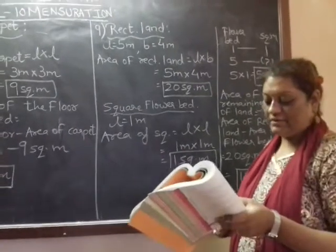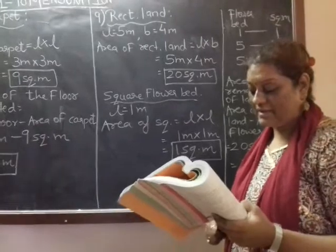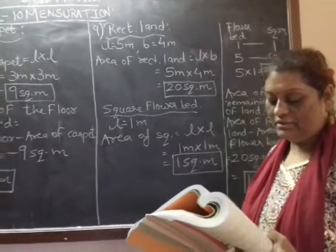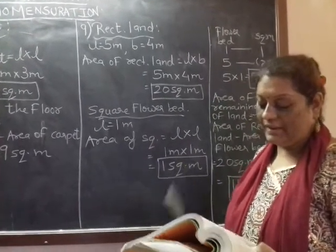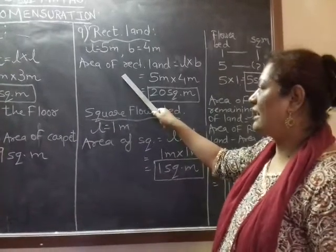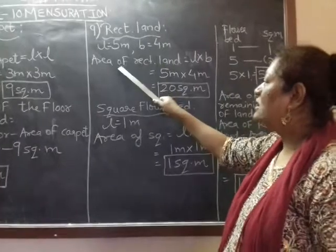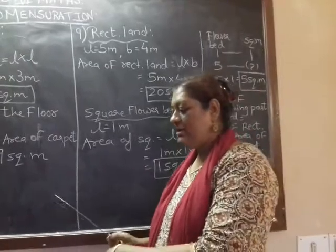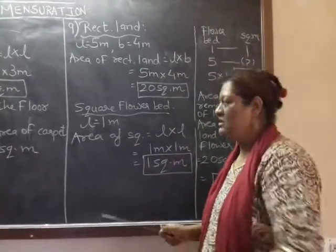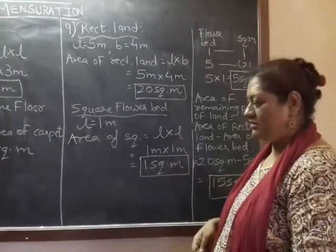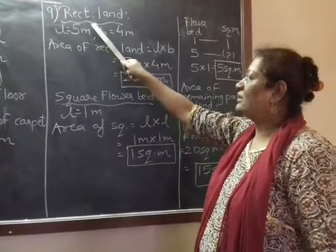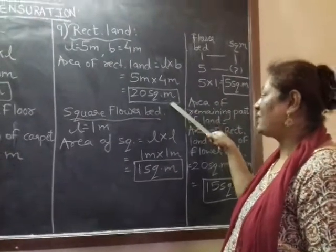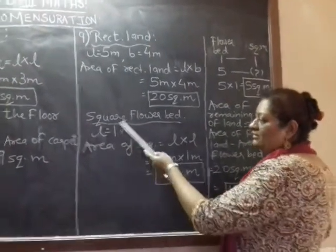Question number 9: five square flower beds, each side 1 meter, are dug on a piece of land 5 meters long and 4 meters wide. What is the area of the remaining part of the land? The land is in a rectangular form. Flower beds are areas where we grow flowers in square shape. Area of rectangular land is 20 square meters.